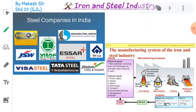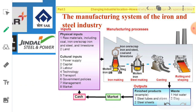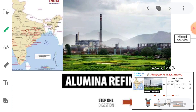The Tata Iron and Steel Plant is an important factory. The manufacturing process involves iron making, then casting, then rolling and shaping to form products such as steel tubes and pipes, steel sheets and hot water equipment, which then go to market. Cultural inputs include power supply, capital, labour, technology, transport, government policy, management and market. Physical inputs include raw materials such as coal, iron ore, scrap iron, steel and limestone.